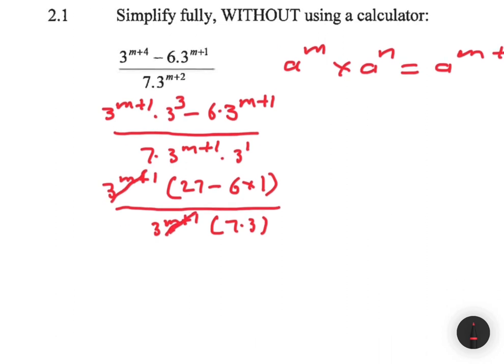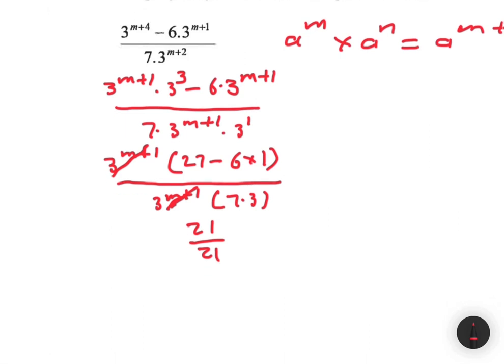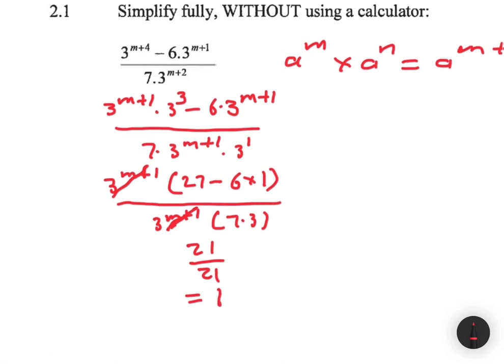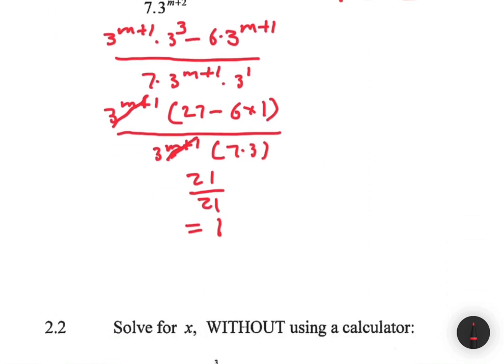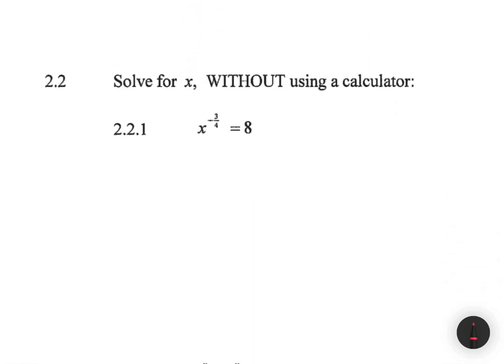So what is 27 minus 6? That is 21. And then what is 7 multiplied by 3? That is 21 again. So 21 divided by 21 equals 1. The answer for 2.1 is 1. Let's move to the following problem.